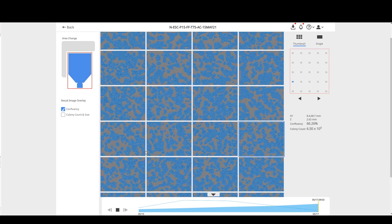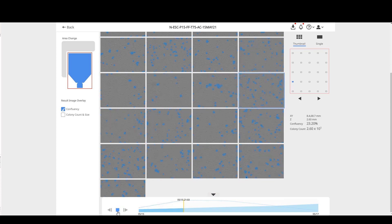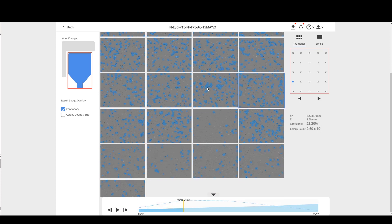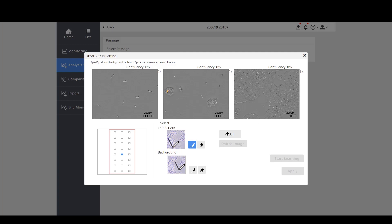The system's AI technology automatically measures the health of cell cultures using consistent parameters. This provides quantitative, reproducible data. Simply teach the system by highlighting a few cells or colonies and paint them in. The algorithms do the rest of the work.